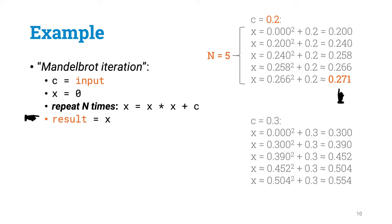So for example, if C is 0.2 and n is 5, the result is apparently approximately 0.271.